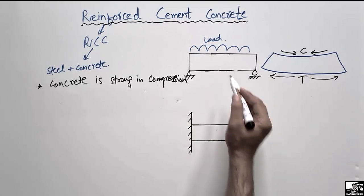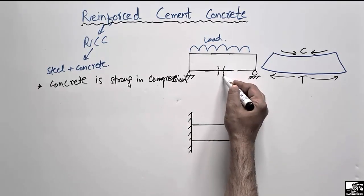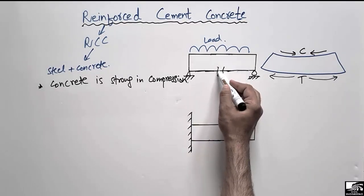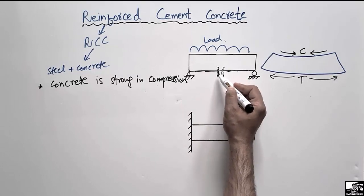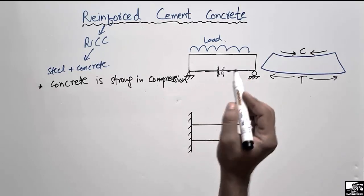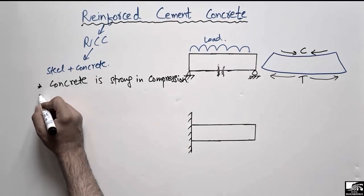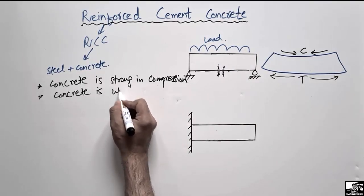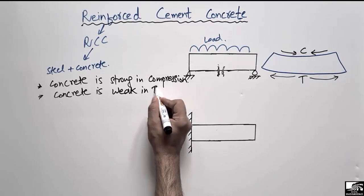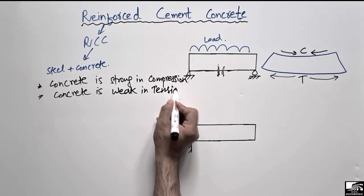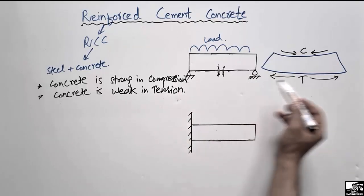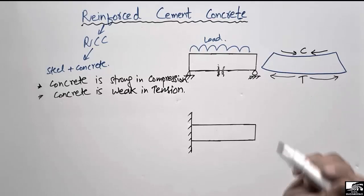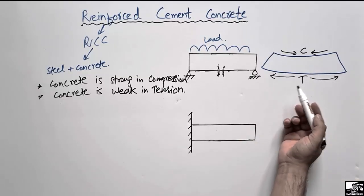There will be a big crack created between the two portions of the beam, which will lead to the collapse of the beam, because concrete is weak in tension — it cannot resist tensile stresses or tensile load. So due to this property, we must provide some material that can increase the tensile capacity of the beam.